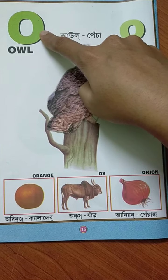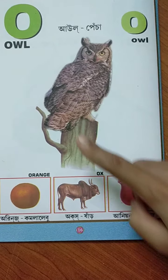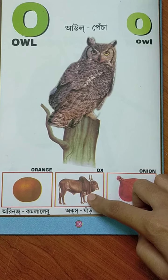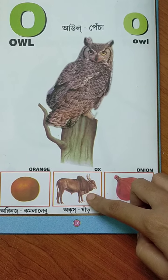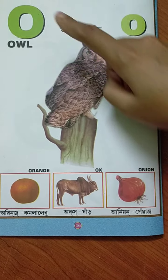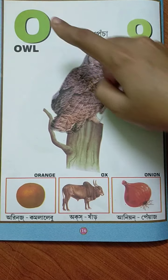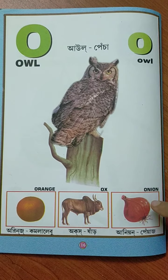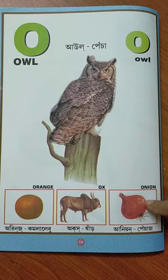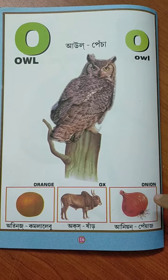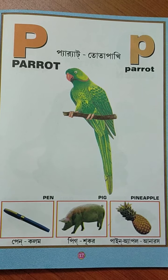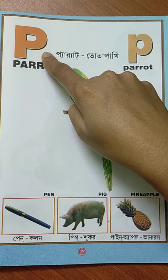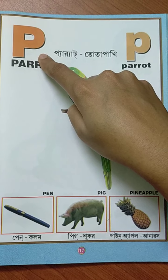O for ox. Ox mane holo shongod. O for onion. Onion mane holo peyaj.